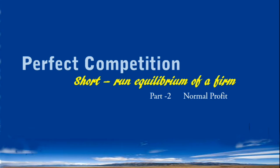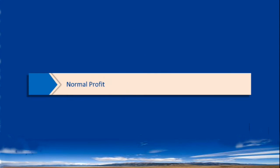Perfect Competition: Short Run Equilibrium of a Firm. Normal Profit is one of the three possibilities of a competitive firm in the short run.